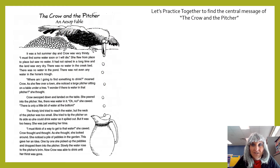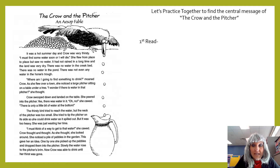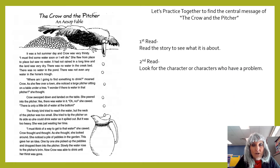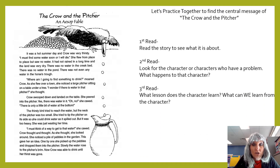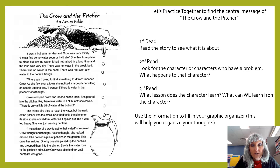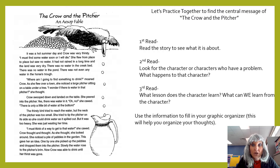We're going to practice together to find the central message of The Crow and the Pitcher, so make sure you have yours out. We're going to do a close reading. During the first read, we're just going to read the story to see what it's about. The second time we read, we're going to look for the character — or characters — who have a problem and see what happens to them. The third time we read, we're going to look for the lesson the character learns, usually toward the end. Then we're going to fill in the graphic organizer — something that helps you organize your thoughts onto paper.